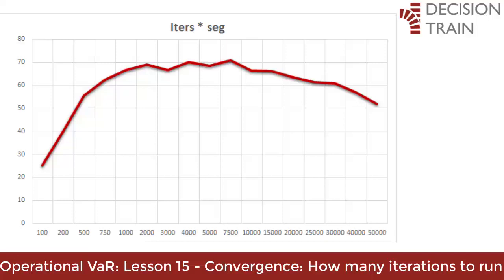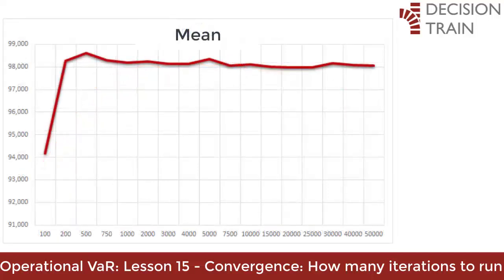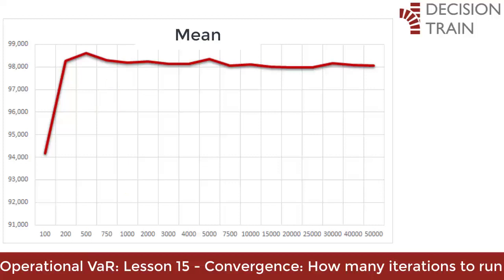Now again, depending on how precise you want to be on certain statistical goals, your number of required iterations may be different. For example, if you are only interested in the mean or average operational risk, based on the central limit theorem, 1,000 iterations might be sufficient. Before 1,000 iterations, the mean has not stabilized. It will take about 8,000 iterations for the mean to stabilize somewhat lower than what was calculated with just 1,000 iterations.